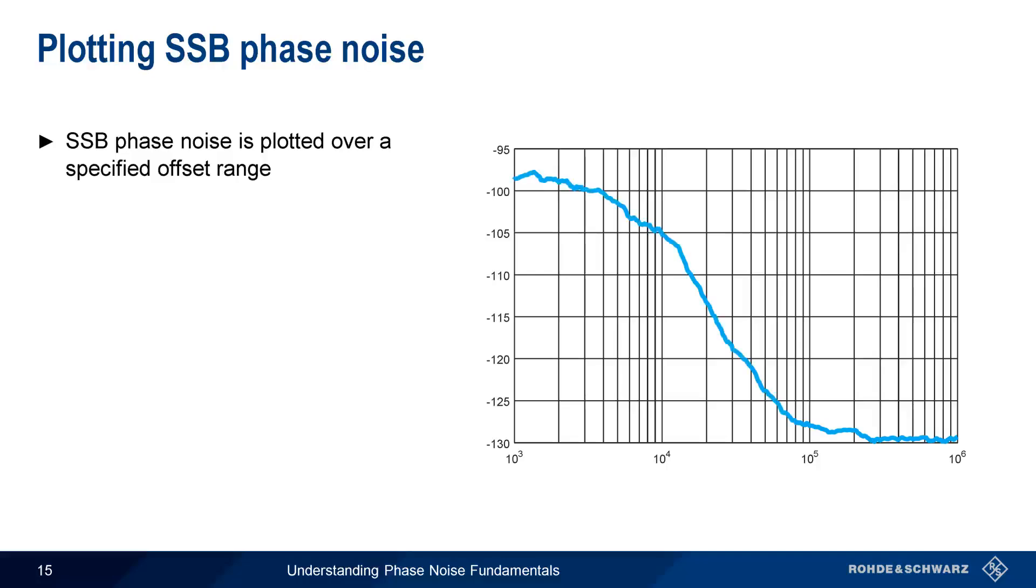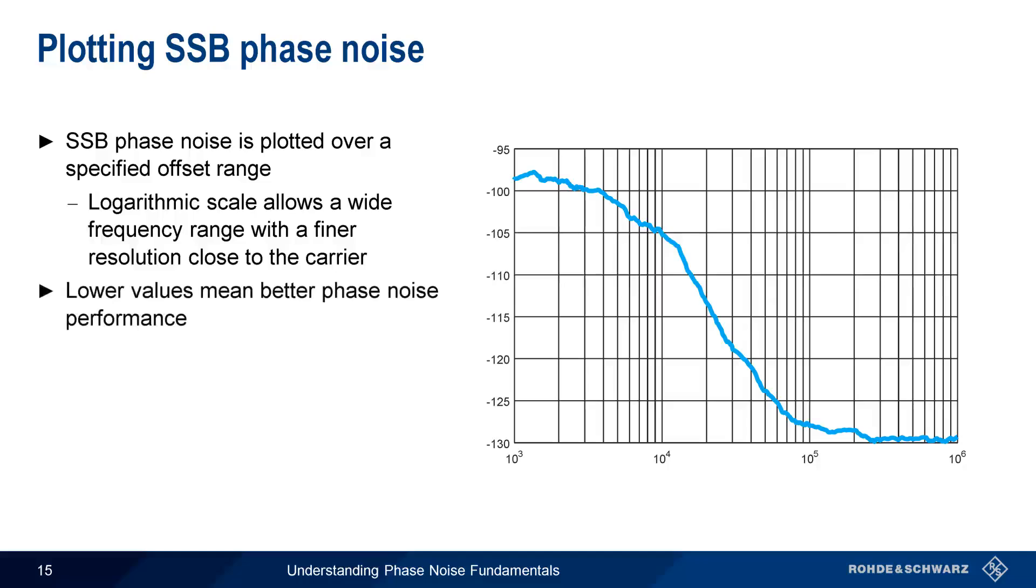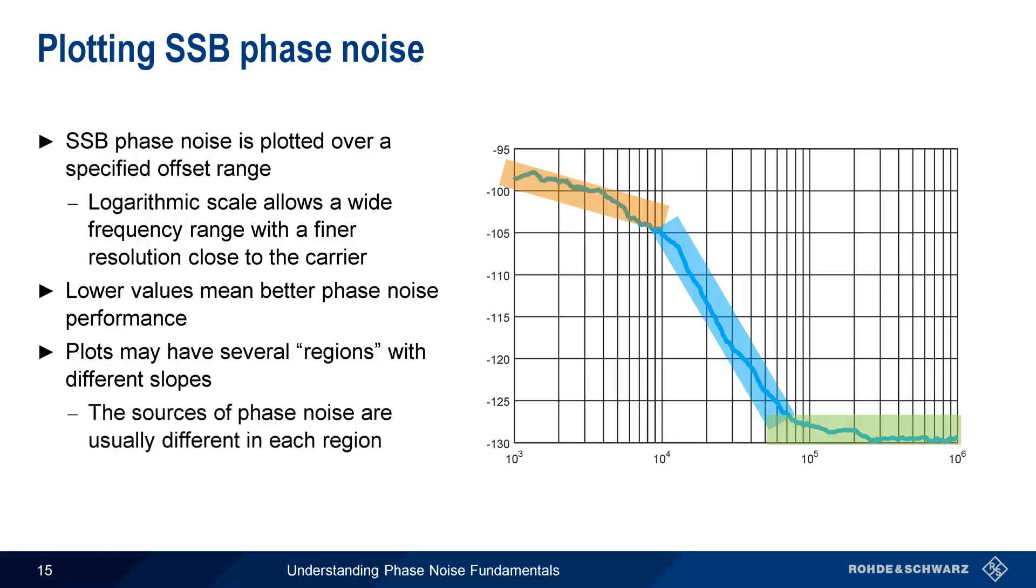Single sideband phase noise is measured and plotted over a defined offset range, in this case, 1 kHz to 1 MHz. A logarithmic scale is used because it covers a wide frequency range, but also has finer resolution close to the carrier. We're often more concerned with close-in phase noise than phase noise at larger offsets. Since phase noise is undesirable, lower values in our phase noise plot mean better phase noise performance. Note that many phase noise plots have distinct regions in which the phase noise graph has different slopes. This is due to the fact that the causes or sources of phase noise are often different at different offsets from the carrier.